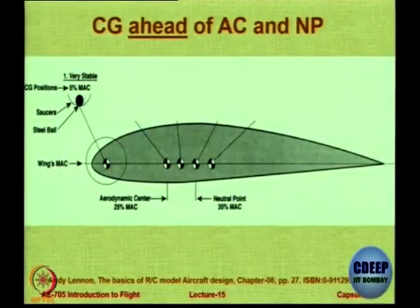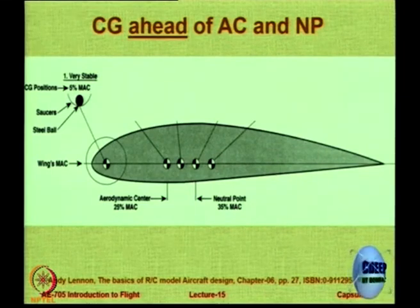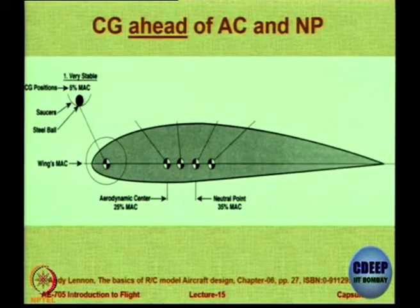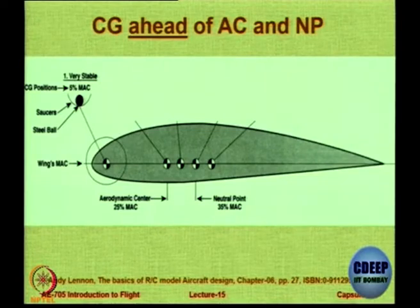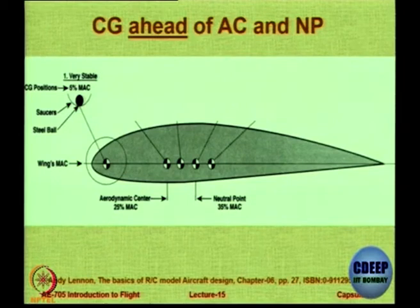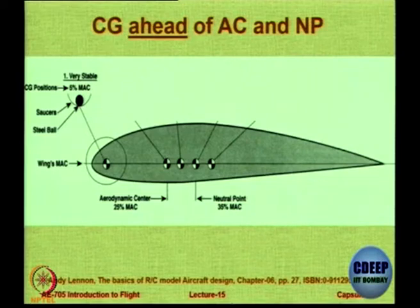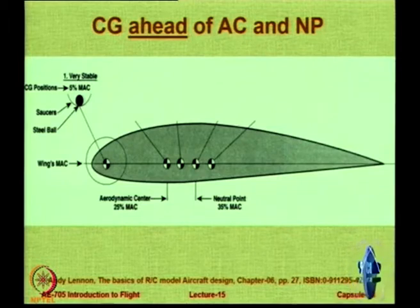So the first condition is: CG ahead of the neutral point and ahead of the aerodynamic center. Now the location of the center of gravity of the aircraft — note this is the aircraft CG, not the wing CG — is an interesting point. Typically the center of gravity of the aircraft lies somewhere on the wing. It is rarely a situation when the center of gravity is behind or ahead of the wing entirely.